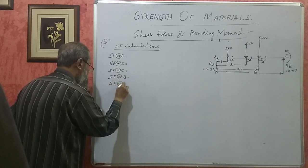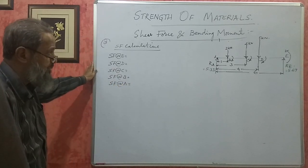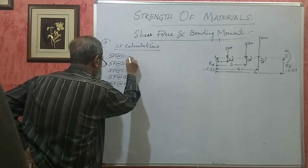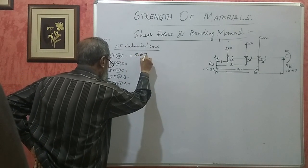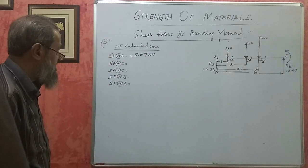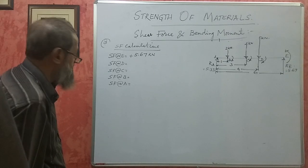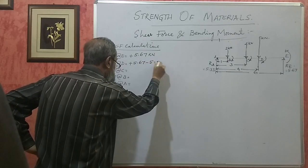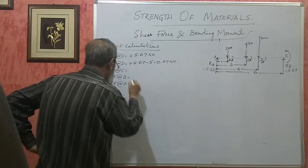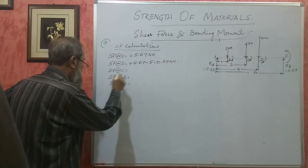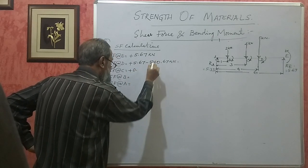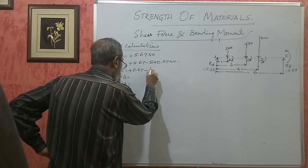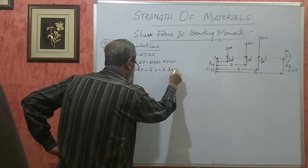Now SF calculations. These are the five salient points. SF at E is plus 5.67 kilonewton because that is an upward force. At D, it is plus 5.67 minus 5, which is 0.67 kilonewton. At C, the balance is plus 0.67 minus 4, which is minus 3.33 kilonewton.